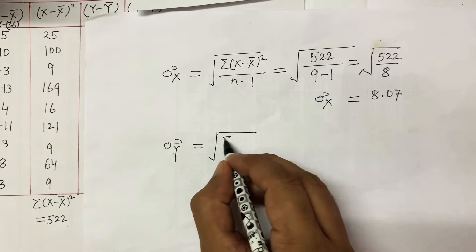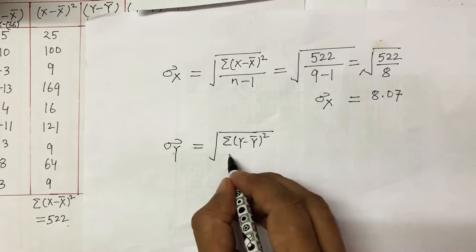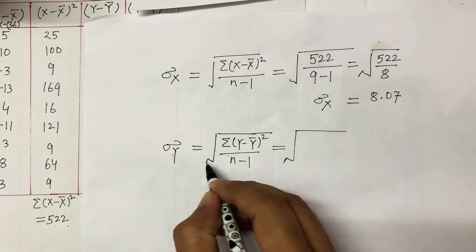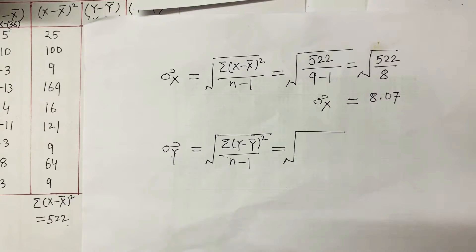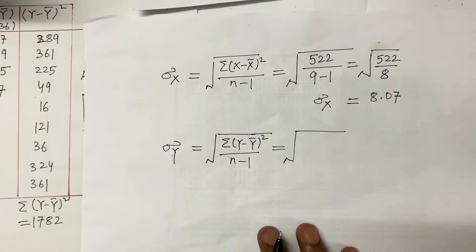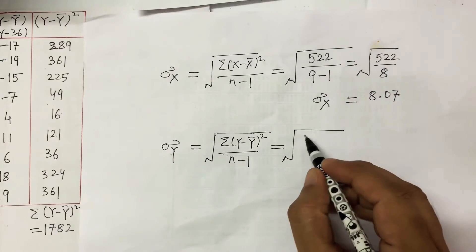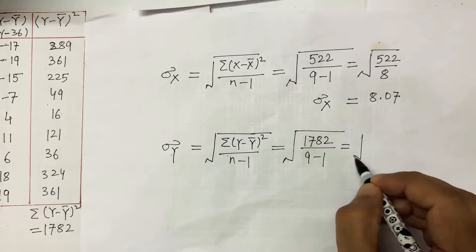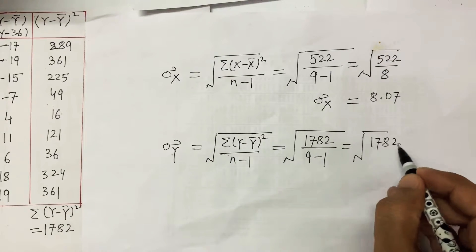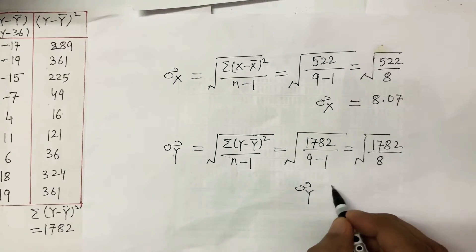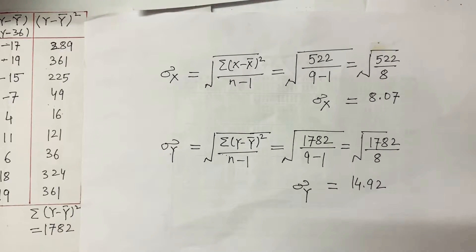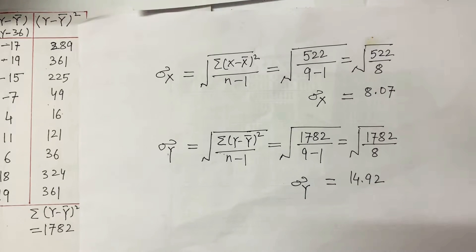The formula is the square root of the sum of (Y minus Y-bar) squared divided by n minus 1. The sum of (Y minus Y-bar) squared is 1782, divided by n minus 1, which is 9 minus 1 equals 8. So it is the square root of 1782 divided by 8, and the standard deviation of Y comes out to be 14.92.